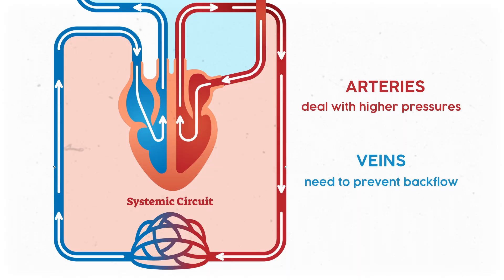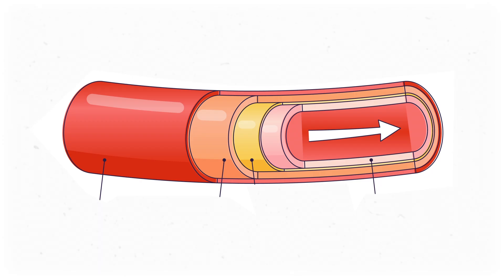Since arteries and veins are hooked up to different structures and have slightly different tasks, they're built differently. Arteries are under much more pressure than veins, and veins need to make sure that blood doesn't flow backwards — they have anatomy that helps them do that. At its most basic level, a blood vessel is a tube. That empty space inside the tube, and all anatomical tubes for that matter, is called the lumen.